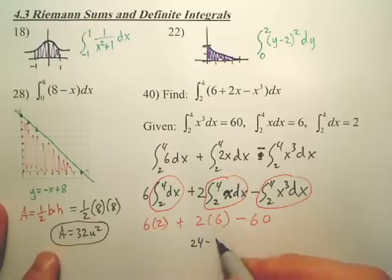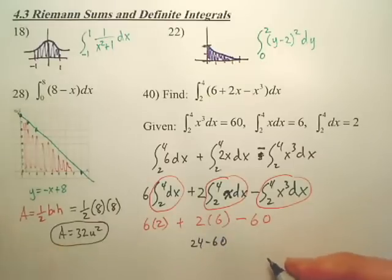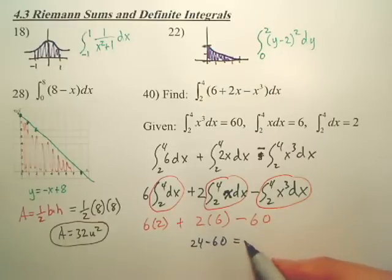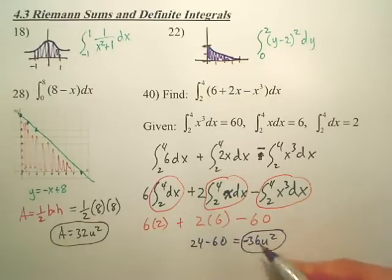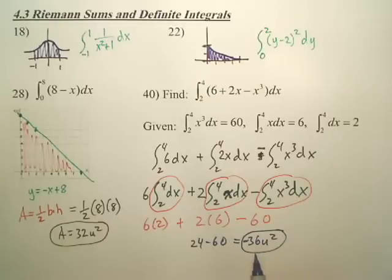So basically 24 minus 60. My answer is going to be negative 36. Negative means it's under the x-axis. My area, most of this graph is below the x-axis. That's what the negative meant.